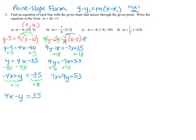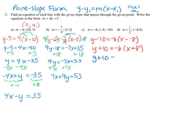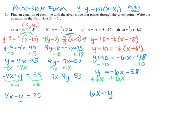For part c, the slope is negative 6 and the point is (negative 8, negative 10). Using point-slope form: y minus (negative 10) equals negative 6 times (x minus (negative 8)), which simplifies to y plus 10 equals negative 6 times (x plus 8). Distribute to get y plus 10 equals negative 6x minus 48, then subtract 10 to get y equals negative 6x minus 58. Add 6x to both sides: 6x plus y equals negative 58.